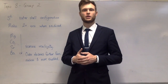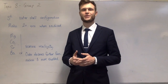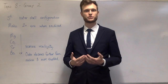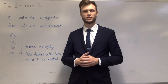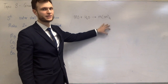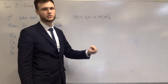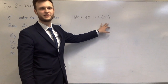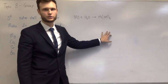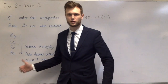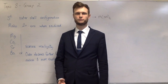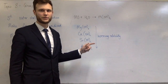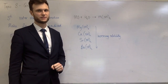You also need to know what's produced when a group 2 metal oxide reacts with water — that is a metal hydroxide. You also need to know the relative solubilities of the group 2 metal hydroxides. Magnesium hydroxide is the least soluble, and going down the group, barium hydroxide is the most soluble. You need to know the impact that this increased solubility has on the pH of these solutions.